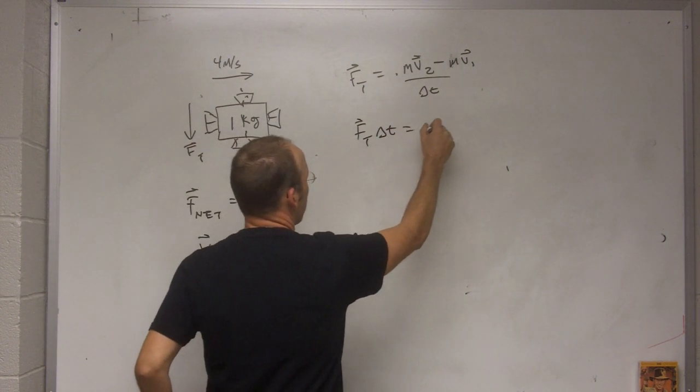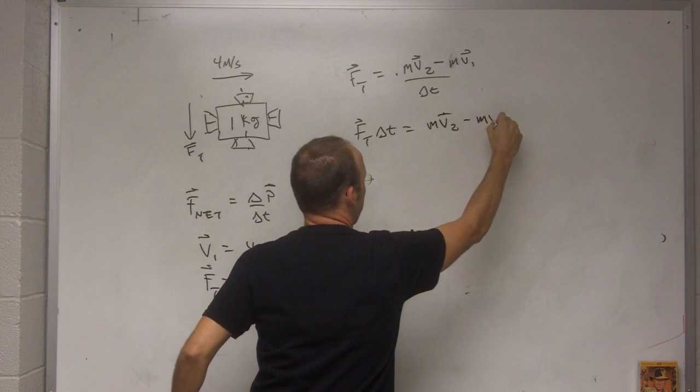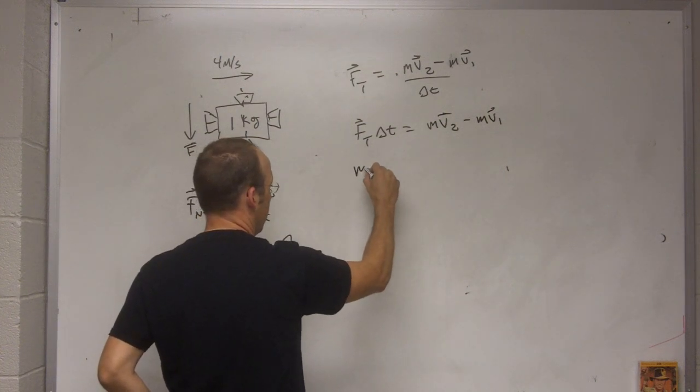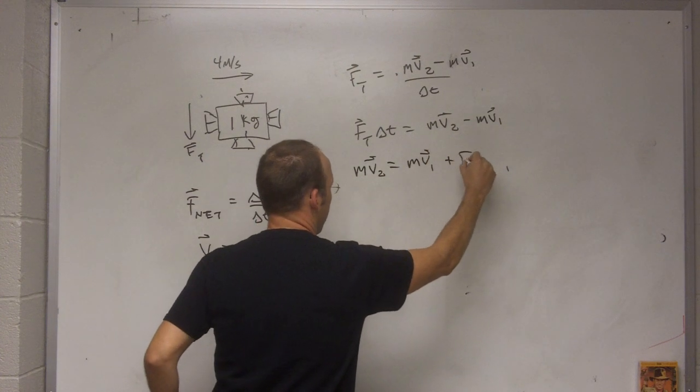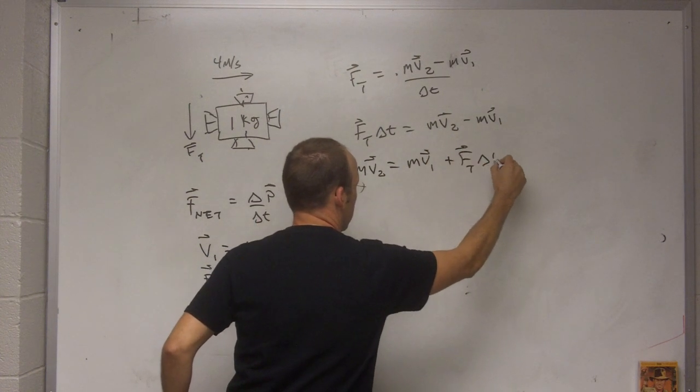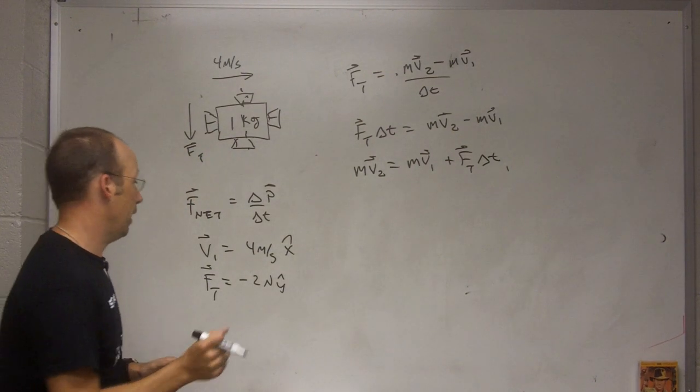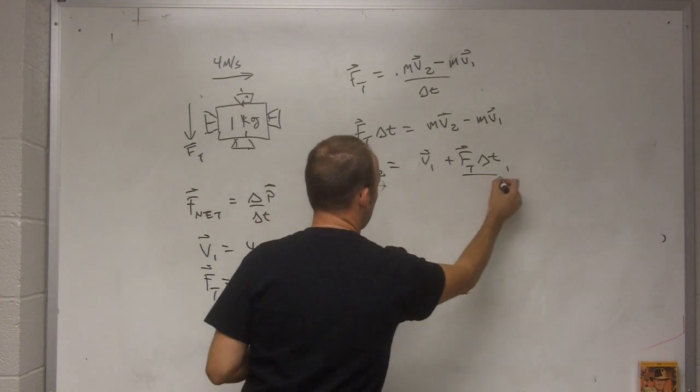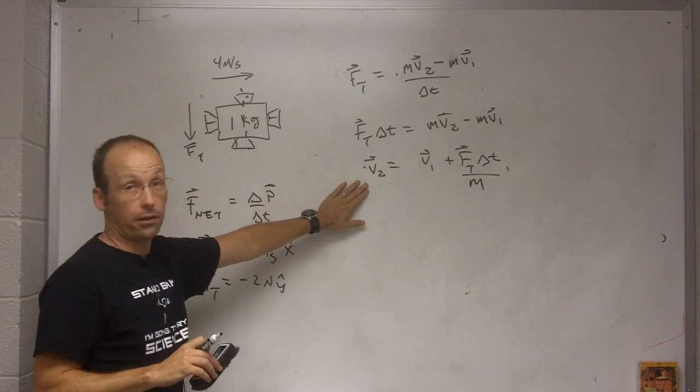equals mv2 minus mv1. I can add that to both sides and I get mv2 equals mv1 plus Ft delta t. Okay, and then I can divide both sides by the mass. There. So now I have an expression for the final velocity and it is a vector.